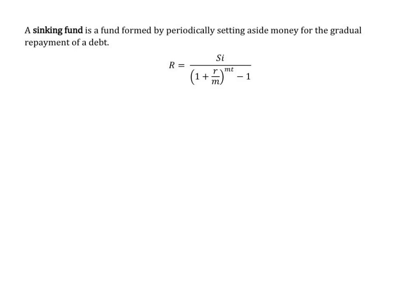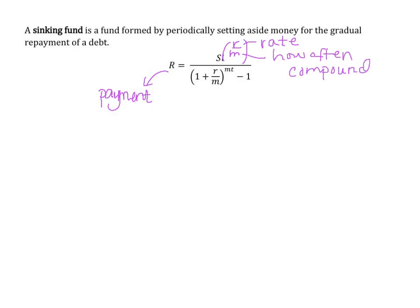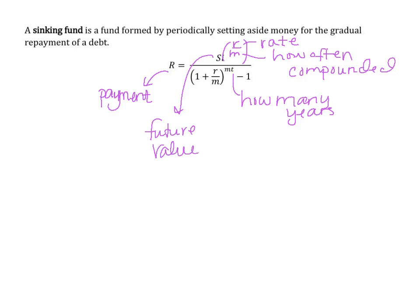A sinking fund is a fund formed by periodically setting aside money for the gradual repayment of a debt. In the sinking fund formula — replacing I with R over M to keep consistent notation — big R is the payment we have to make, little r is the rate, M is how often it's compounded, T is how many years, and the large S is the future value: how much money we want to save for the future.